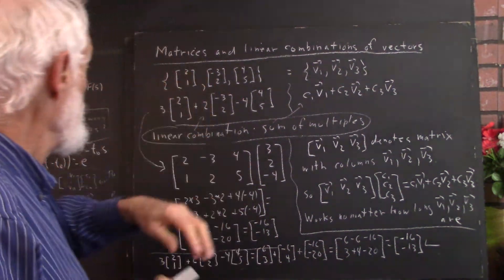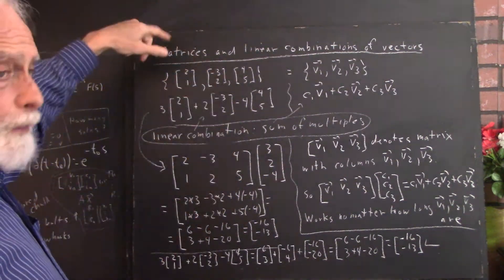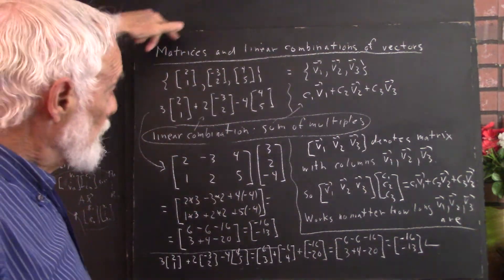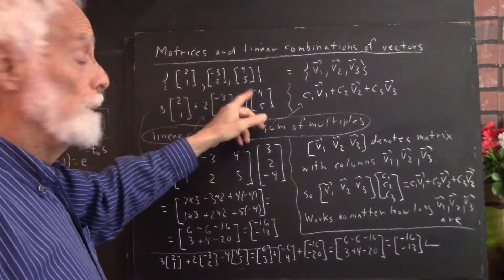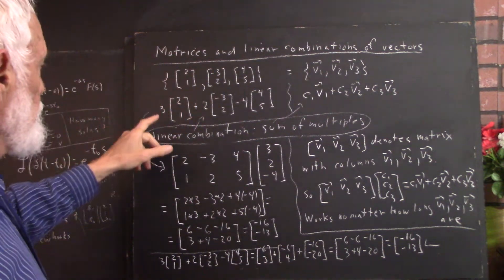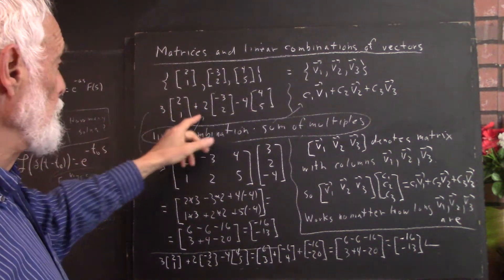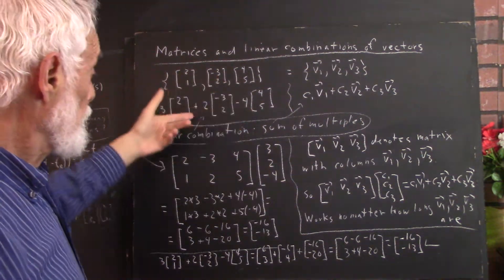Okay, we're given - we've seen this in the preceding video, but just a quick summary about matrices and linear combinations of vectors. We've got three vectors here, and we form a linear combination. We just pick three numbers, in this case 3, 2, negative 4, could be any three numbers. And we form a linear combination, a sum of multiples of the vectors.